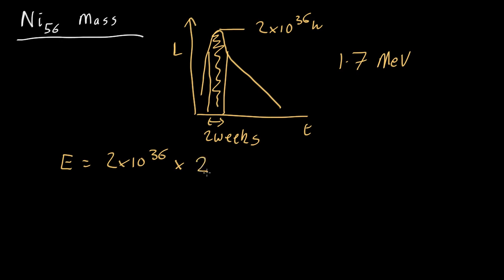So we've got two weeks times seven days in a week times 24 hours in a day times 60 minutes in an hour times 60 seconds in a minute, which comes out at about 2.4 by 10 to the 42 joules.